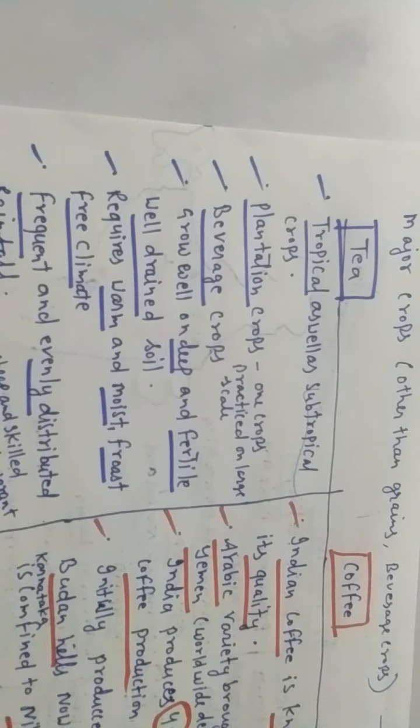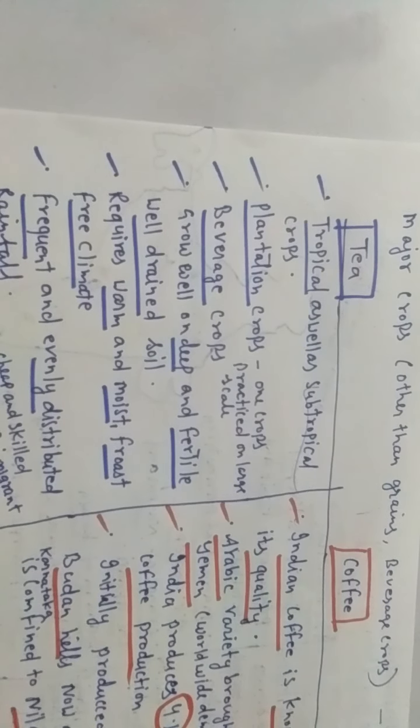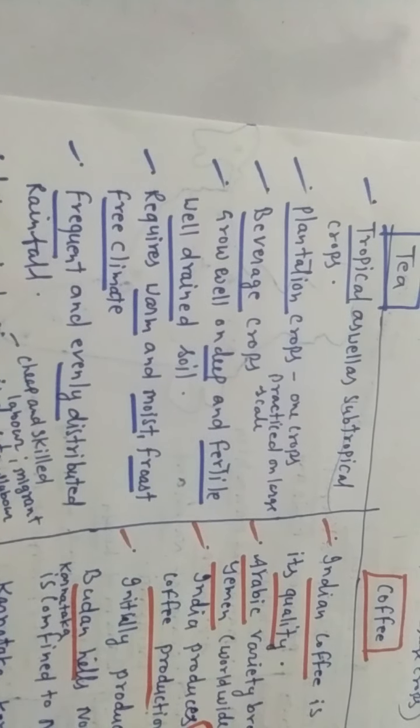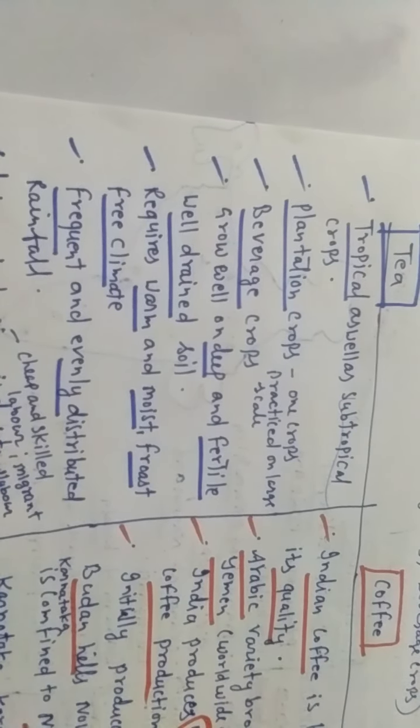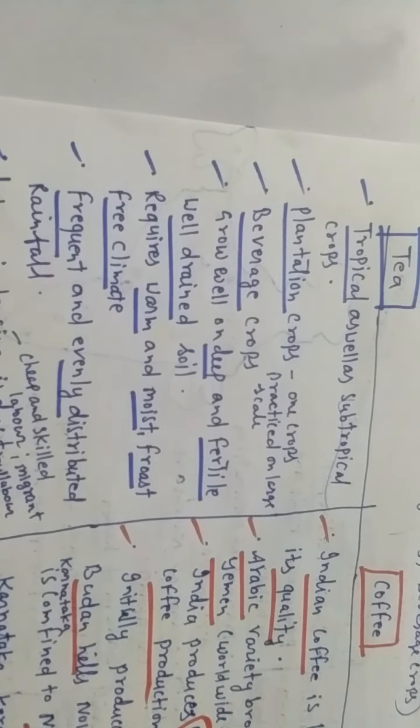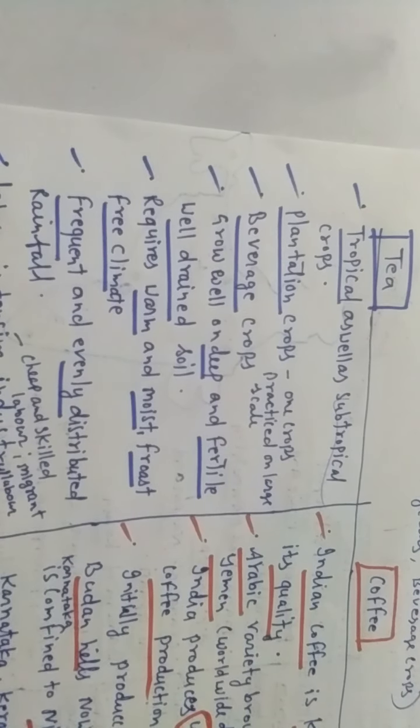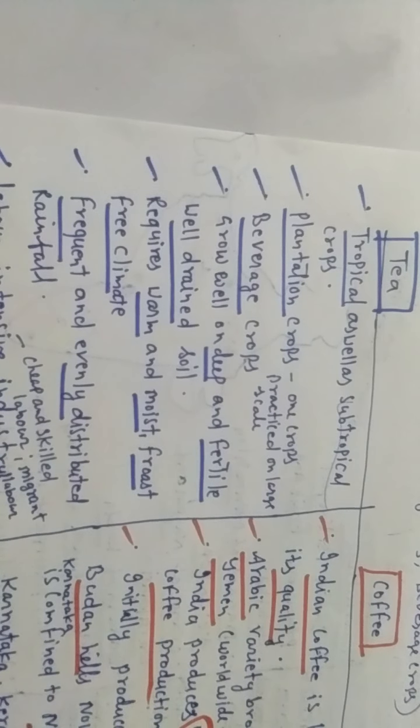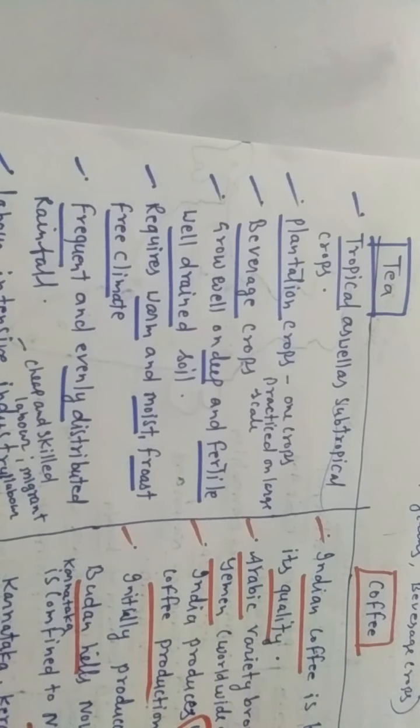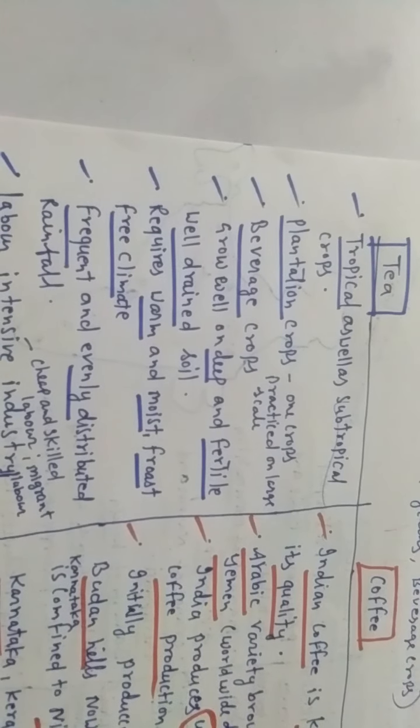Tea is a very important crop of India. India is the largest producer and consumer of tea. It is a tropical as well as subtropical crop. It is a plantation crop, meaning crops that are practiced on a large scale. Tea is also called a beverage crop. It grows on deep and fertile well-drained soil. It requires a warm and moist, frost-free climate.